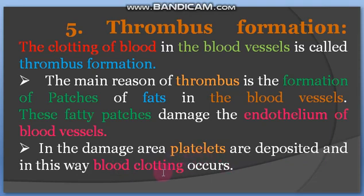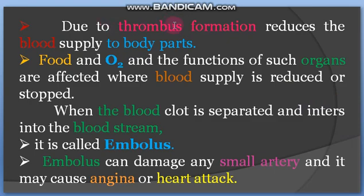Endothelium wali jagah par platelets aakar ikathe ho jaate hain aur coagulation karte hain. Jaise jaise accumulate hote hain, blood ka khilaat (clot) hota hai jise thrombus formation kehte hain. Thrombus formation se blood ka flow body parts ki taraf kam ho jaata hai.